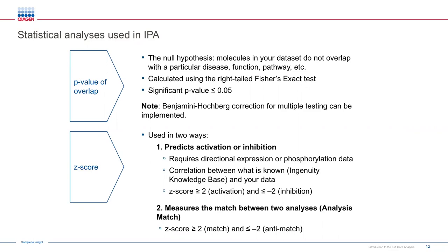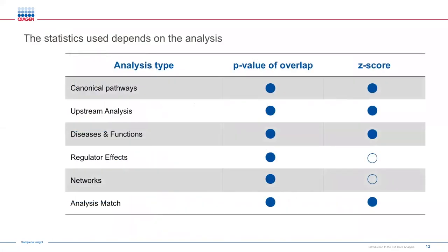One more note about the statistics: p-values are used to calculate significance in every analysis, but z-scores are only used when we're talking about downstream effects, upstream regulators, and the Analysis Match feature.